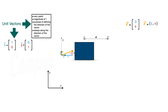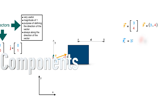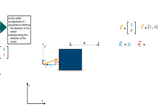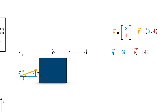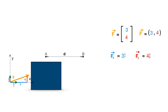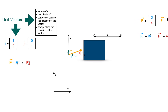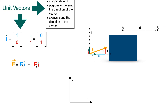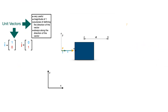The component of the force vector along the x-axis is written as 3 i-hat, where i-hat shows the direction. The component along the y-axis is written as 4 j-hat, where j-hat shows the direction along the y-axis. Since every vector equals the sum of its vector components, the force vector will be equal to 3 i-hat plus 4 j-hat.